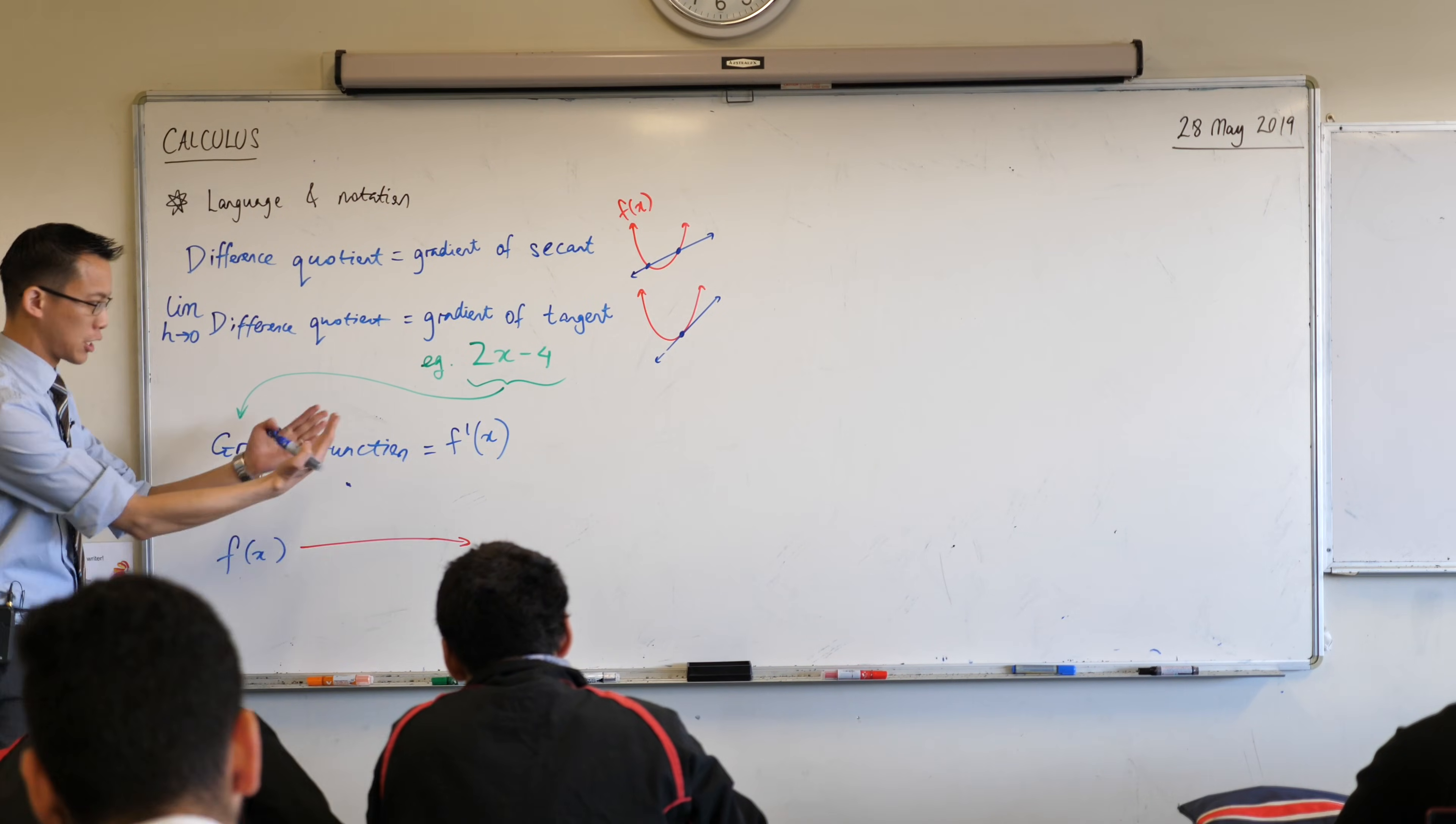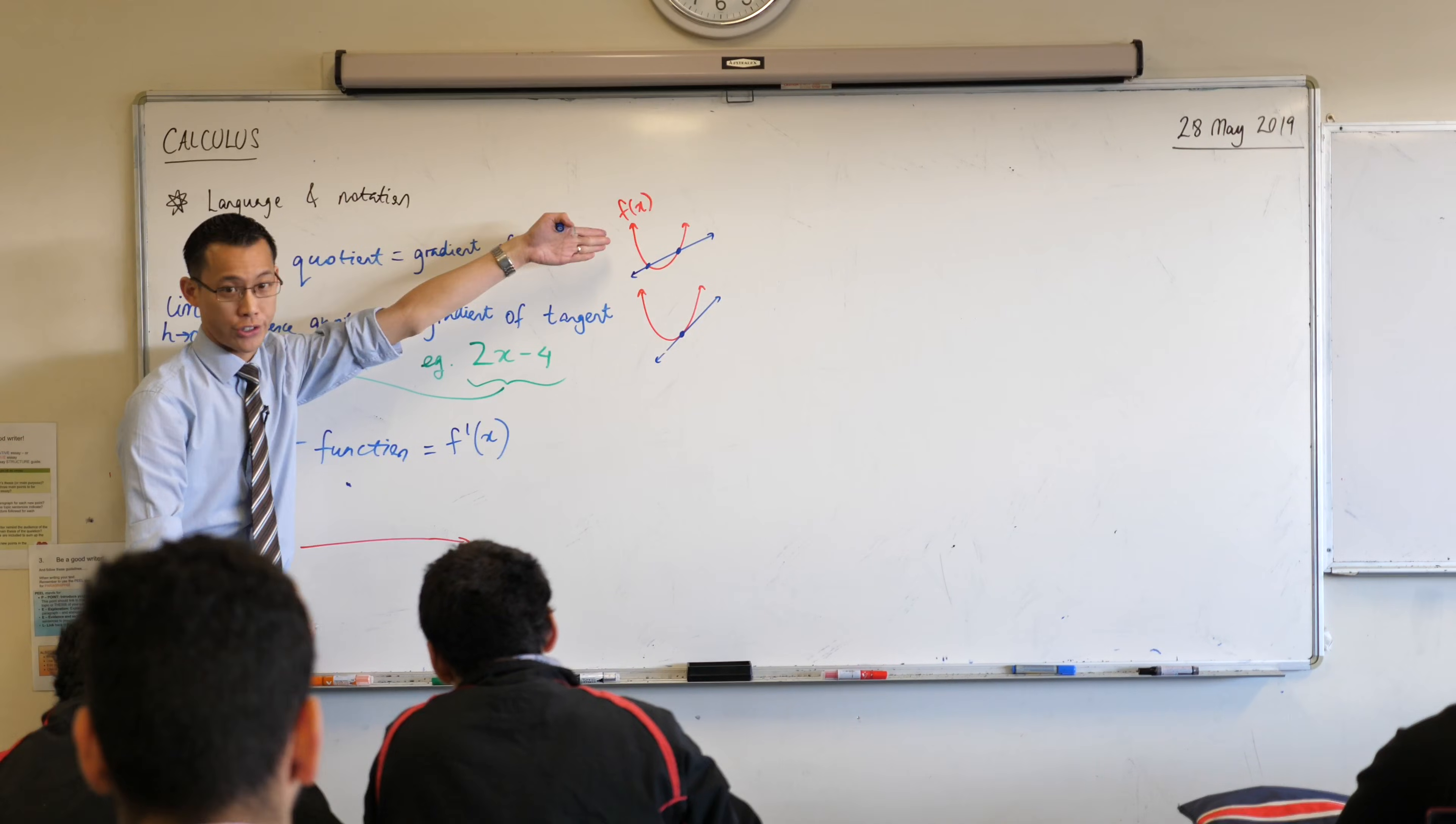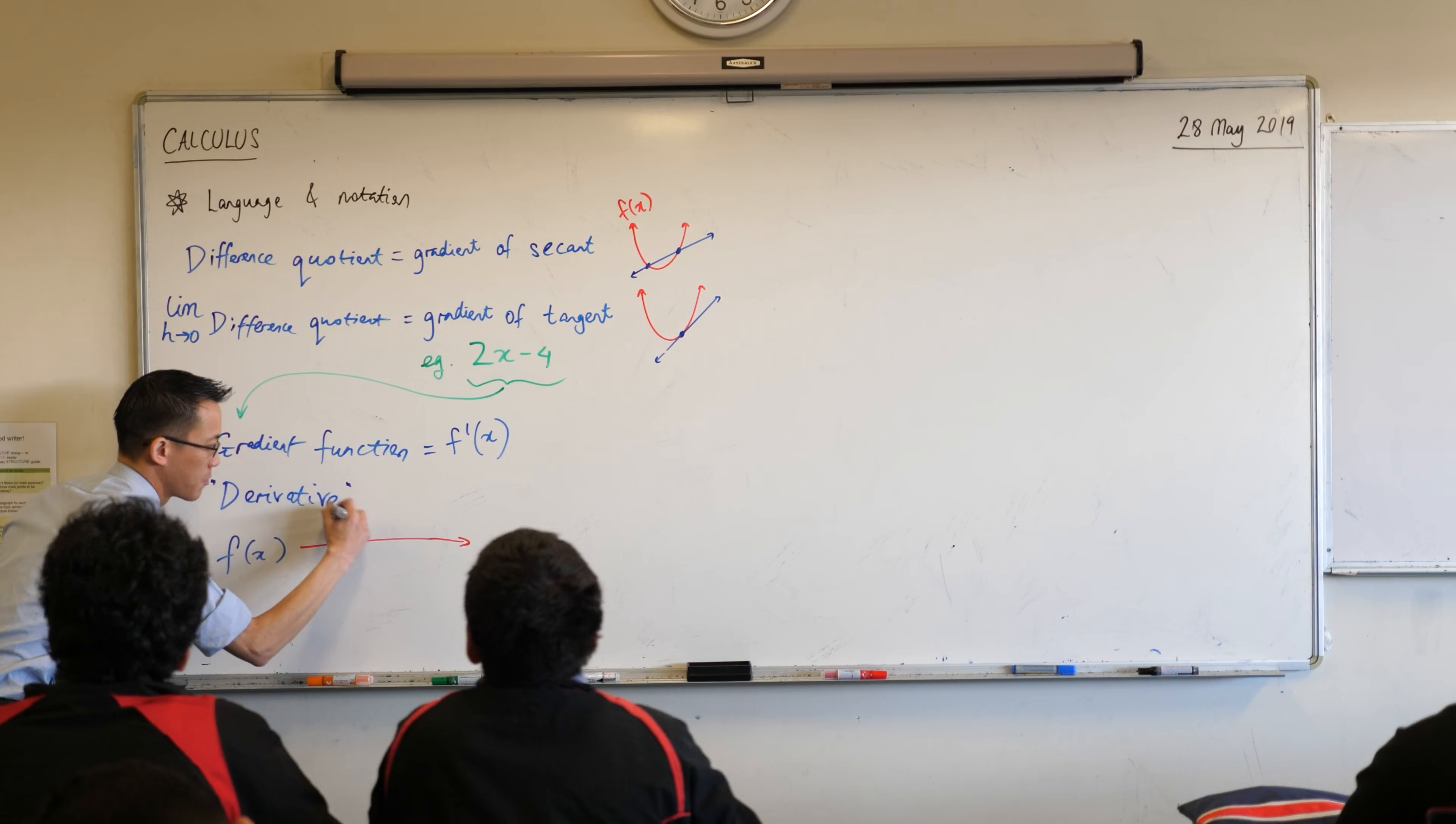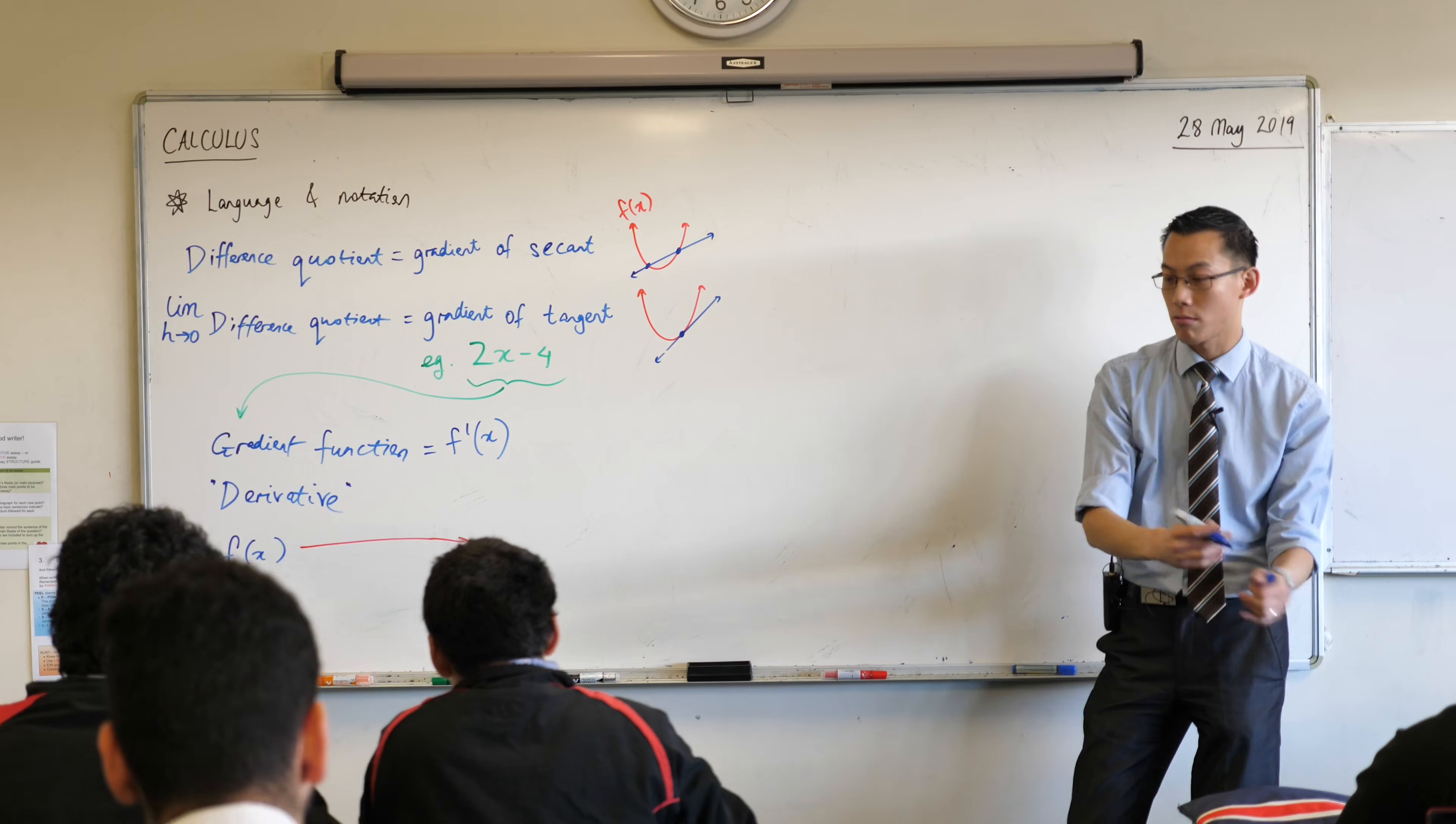Now, because this gradient function comes from the original function, we give it another name. And you might have heard this one thrown around a little bit by your year 12 friends. We call it the derivative, because a derivative literally means it came from something else, right?